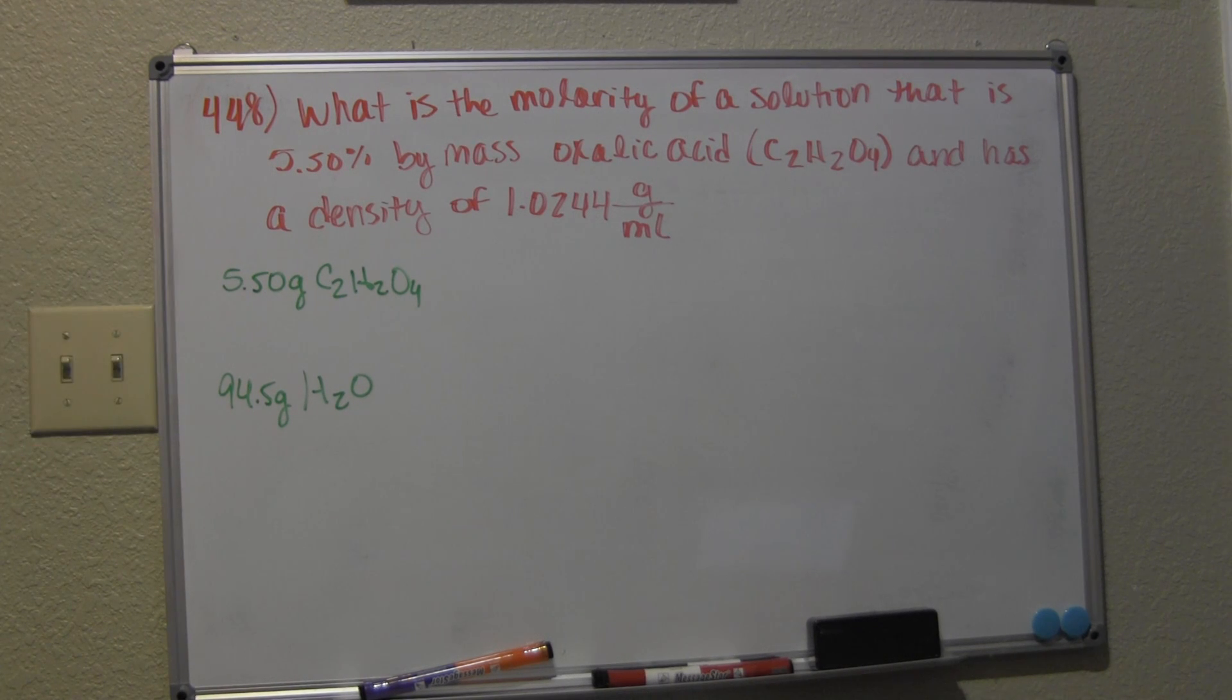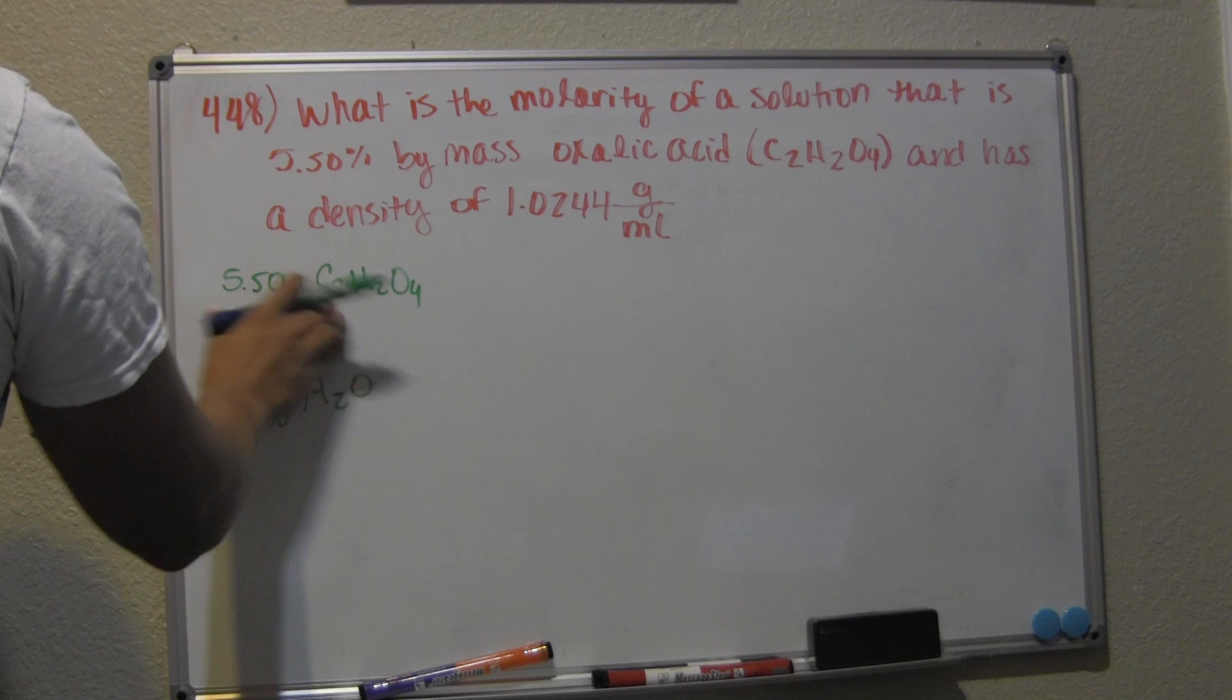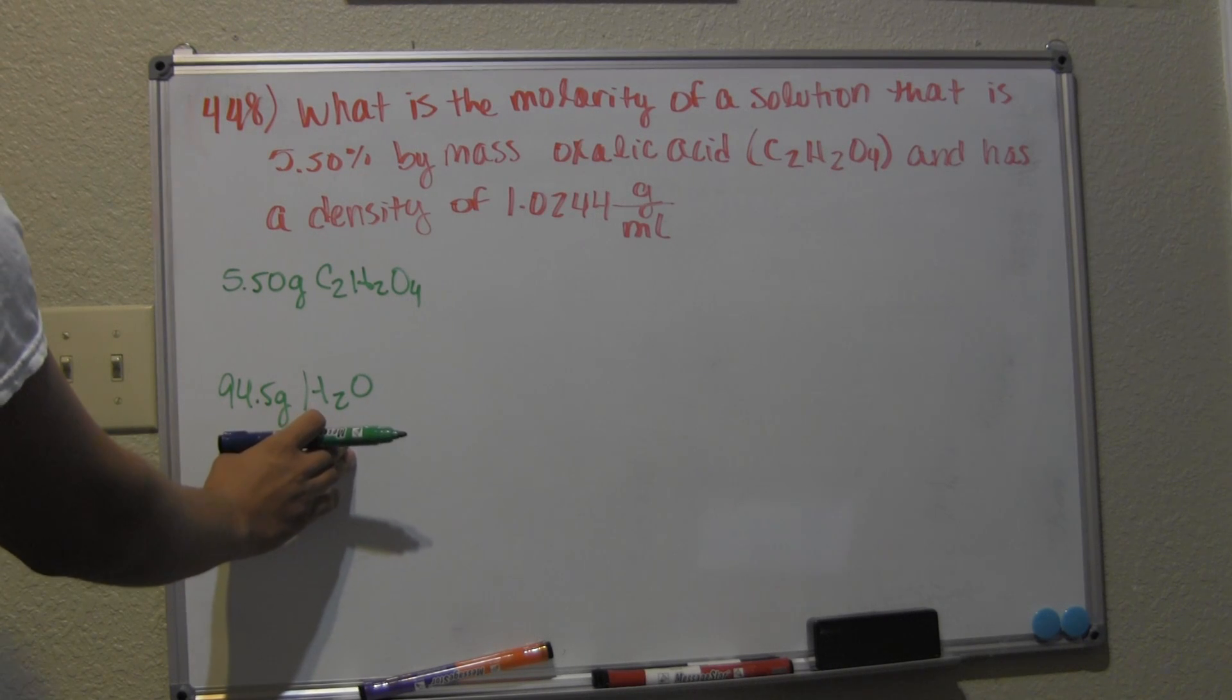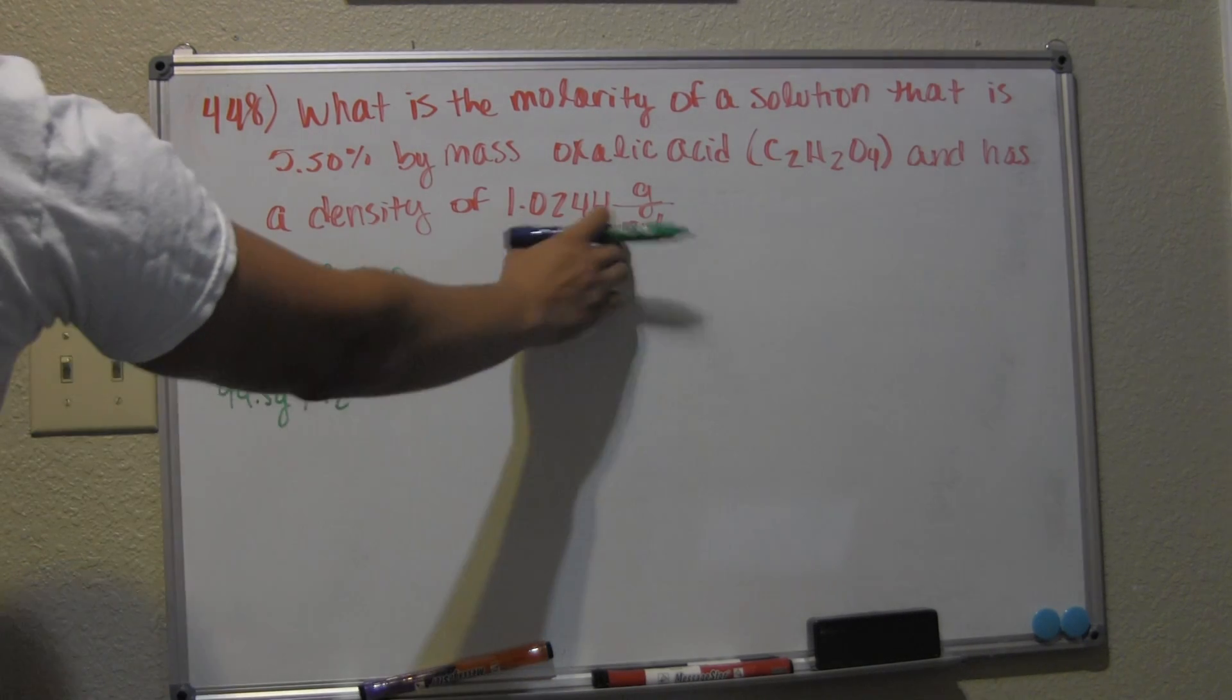In order to solve this equation, we need to convert this sample of oxalic acid into moles, and the way we can do that is by multiplying by the molar mass. We need to change this solvent into liters by using the density.